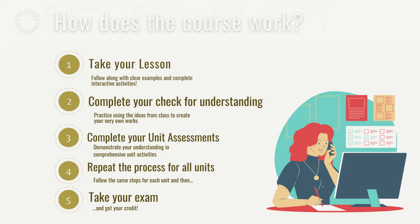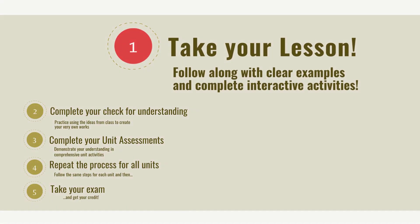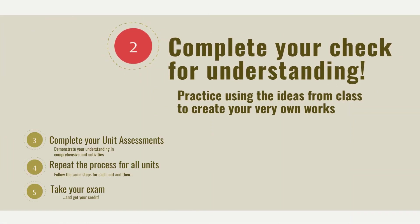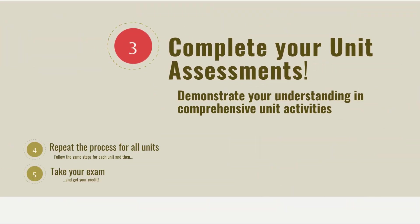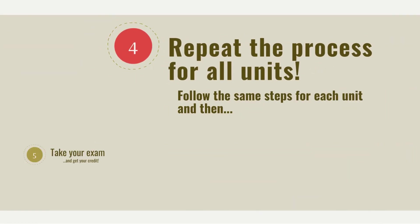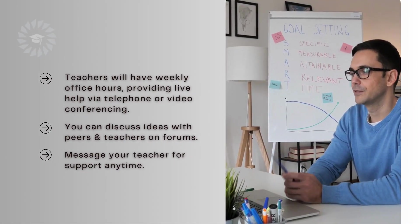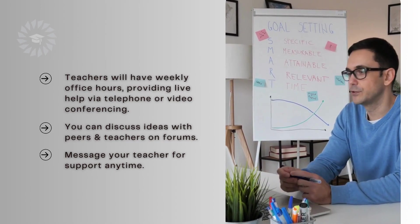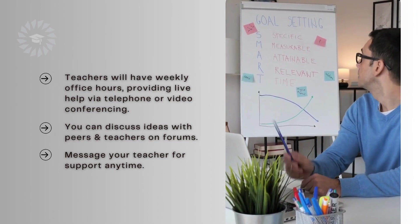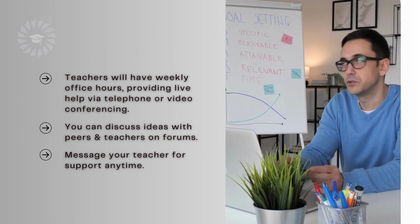So, how does the course work? First, take your lesson — follow along with clear examples and complete interactive activities. Second, complete your check for understanding — practice using the ideas from class to create your very own works. Third, complete your unit assessments — demonstrate your understanding in comprehensive unit activities. Fourth, repeat the process for all units, then take your exam and get your credit. Teachers will have weekly office hours, providing live help via telephone or video conferencing. You can discuss ideas with peers and teachers on forums, and message your teacher for support anytime.